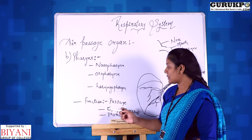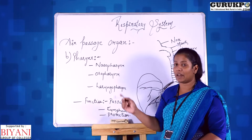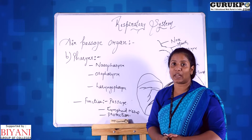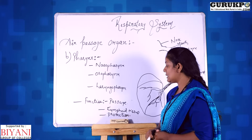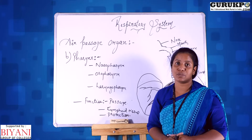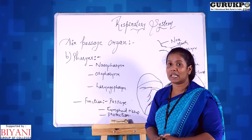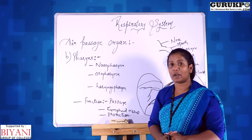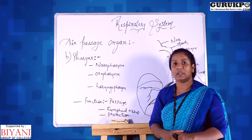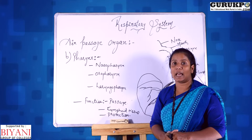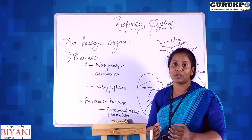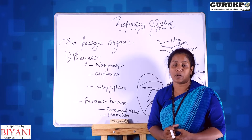The functions of the pharynx include the passage of air and food. It also consists of many lymphoid tissues which give protection to the body, especially to the lower part of the respiratory system, and it helps to collect a large amount of air to enter the body. The laryngopharynx also consists of a collection of lymphoid tissues known as palatine tonsils.